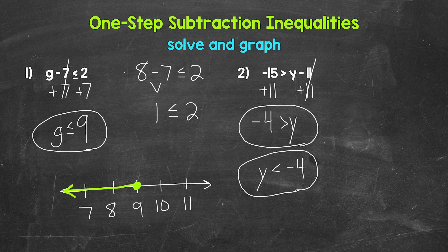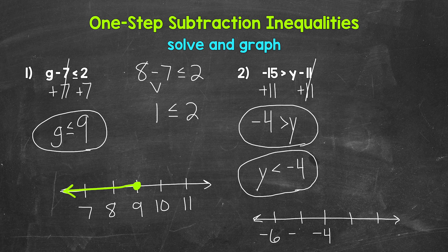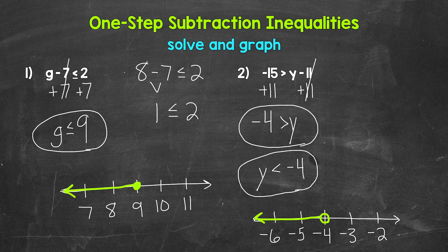Now we're ready to graph. Let's start with a number line with negative four in the middle, and a couple of numbers on both sides: negative six, negative five, negative four, negative three, negative two. Y is less than negative four — we are not including negative four, so negative four is not a solution. We need an open circle at negative four. Then our arrow is going to go left towards all of the values less than negative four. And that's our graph.